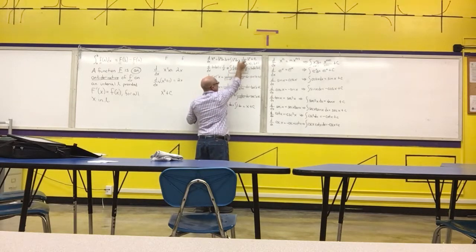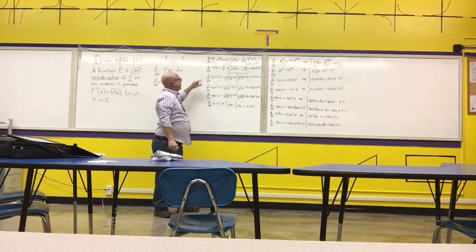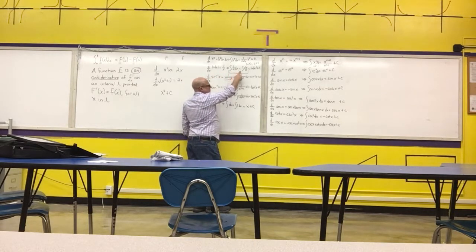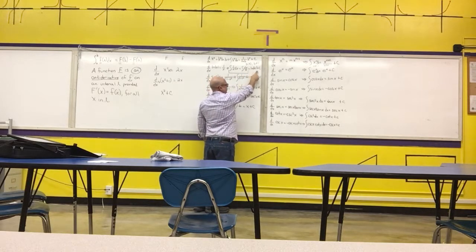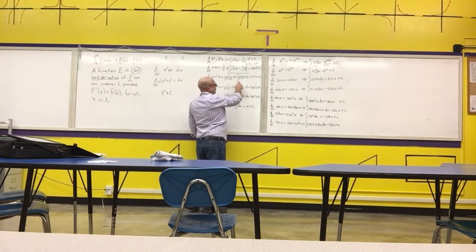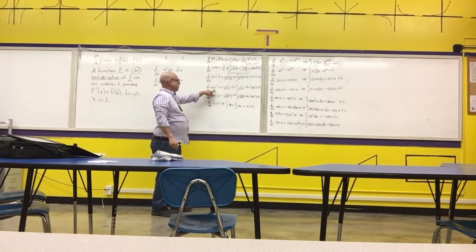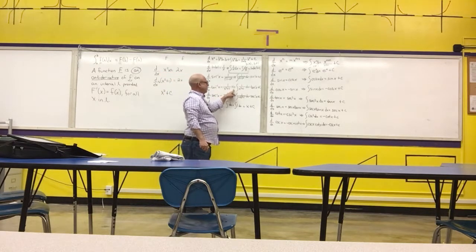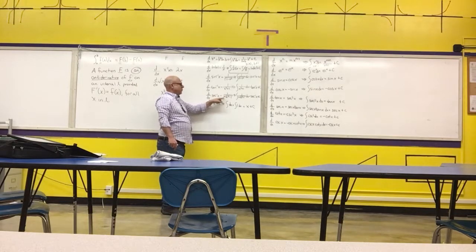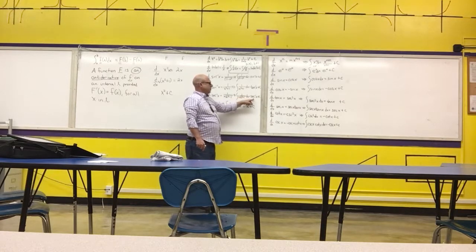So the antiderivative of b to the x is b to the x divided by the natural log of b, where b must be greater than zero and not equal to one for it to be an exponential function. The derivative of the natural log of the absolute value of x is one over x, so the antiderivative of one over x dx — also written as dx over x — is the natural log of |x| plus C. The derivative of inverse sine of x is one over the square root of one minus x squared, so the antiderivative of one over the square root of one minus x squared is the inverse sine of x plus C. The derivative of inverse tangent was one over x squared plus one, so the antiderivative of one over x squared plus one is inverse tangent plus C. The derivative of inverse secant was one over x times the square root of x squared minus one, so the antiderivative of one over x times the square root of x squared minus one is inverse secant plus C.